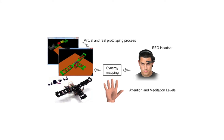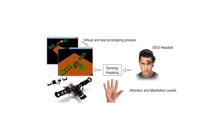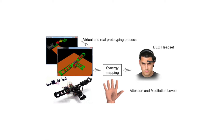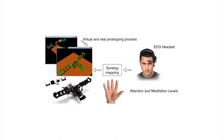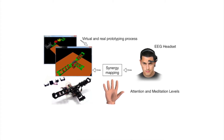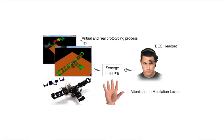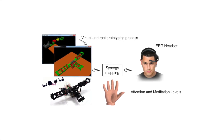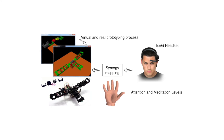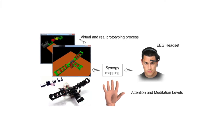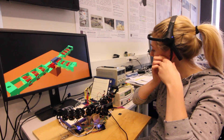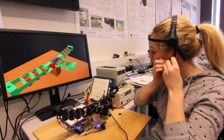In detail, the user's levels of attention and meditation are monitored by using an electroencephalography EEG headset, the NeuroSky MindWave. These levels are used as inputs to control the hand. Since the manipulator features 11 degrees of freedom, a synergistic control approach is chosen to map the inputs with outputs with such a different dimensionality. Related simulations and experimental results are carried out.